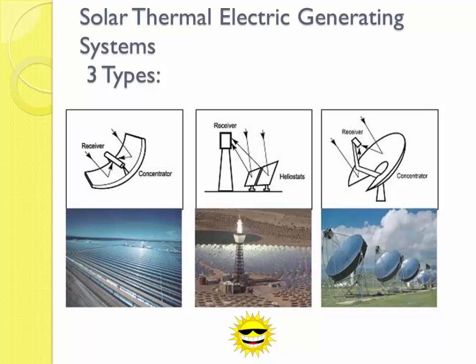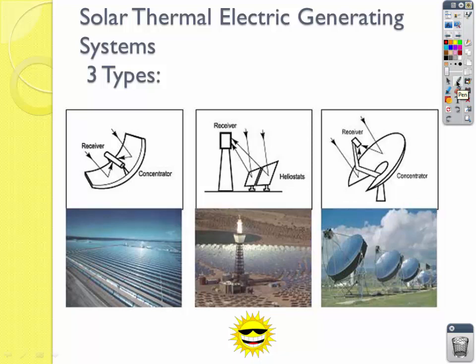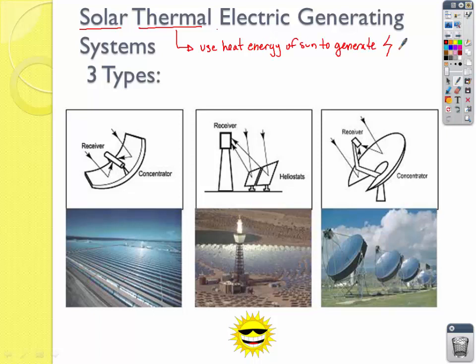Let's start here with solar power plants. When you think of solar cells and solar panels, that's more or less reserved for personal use, maybe community use, small-scale power generation. But we're going to start with active solar technologies — actual power plants. A solar power plant is called a solar thermal power plant, meaning we use the heat energy of the sun to generate electricity. These power plants are all located in the desert to maximize the amount of sunlight.